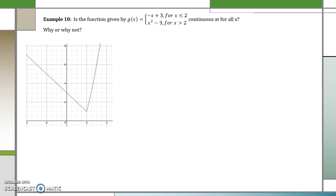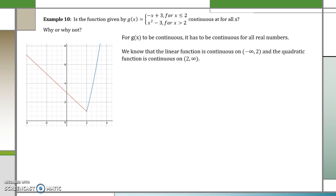What about this piecewise function? When x is less than or equal to 2, we have the linear line negative x plus 3. However, when x is greater than 2, we have the quadratic function x squared minus 3. We want to know if the function is continuous for all values of x. We know that a linear line is continuous from negative infinity to 2, and a quadratic function is continuous from 2 to infinity. So the only point in question is whether the function is continuous at x equals 2.